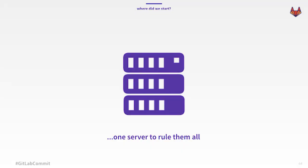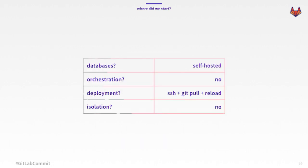Everything was running like always on all startups — single server, everything running in the same place. If it went down, well, everything was down. Of course, we didn't really want to manage databases or pay someone to manage databases, so we self-hosted them. We didn't have any orchestration at all. There was no deployment pipeline, more than just some guy SSH-ing into the server, putting the new code, and reloading. And isolation was something we could only dream of.